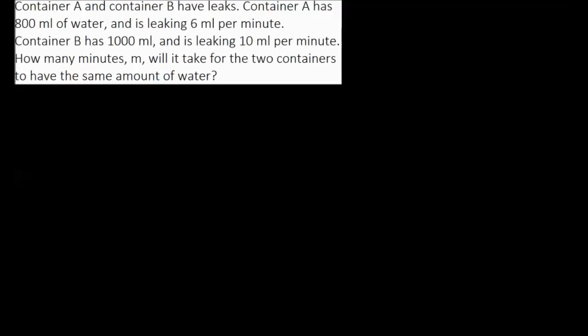Container A and Container B have leaks. Container A has 800 mL of water and is leaking 6 mL per minute. Container B has 1000 mL and is leaking 10 mL per minute. How many minutes M will it take for the two containers to have the same amount of water?